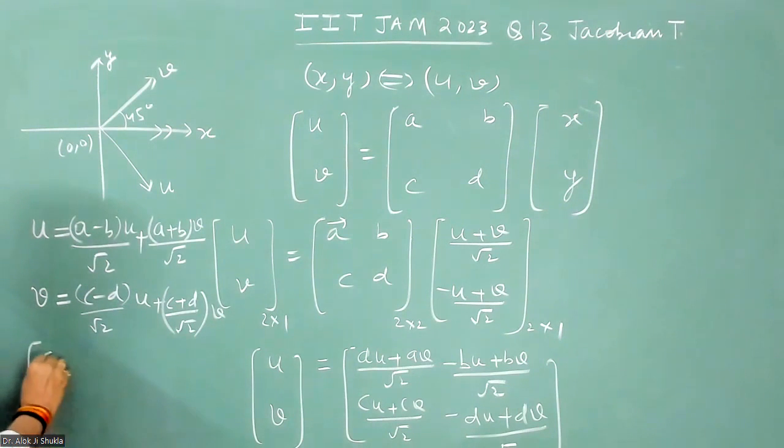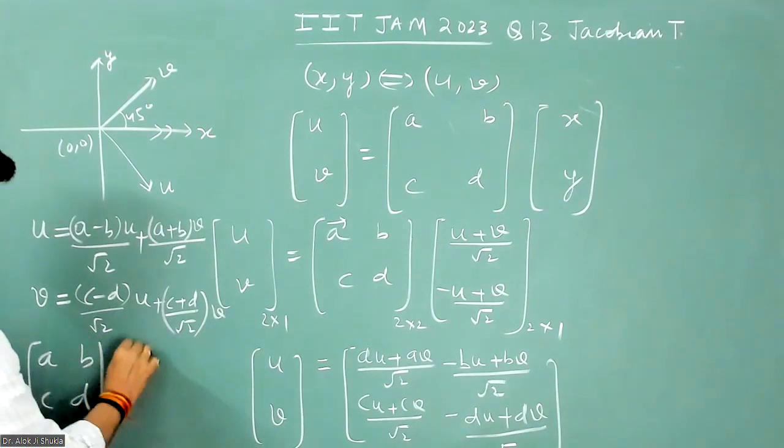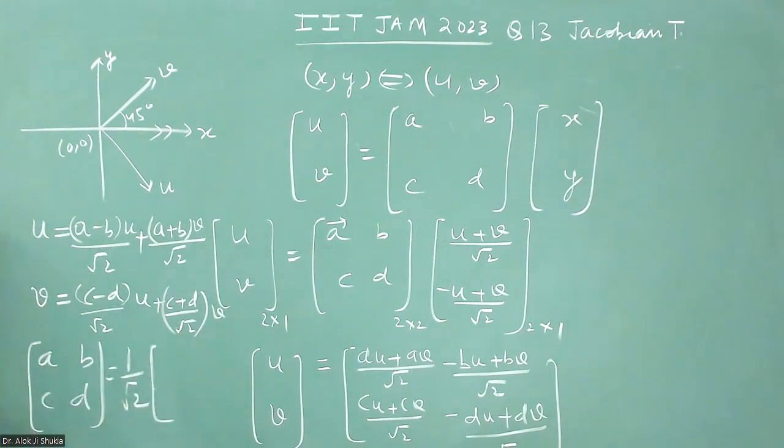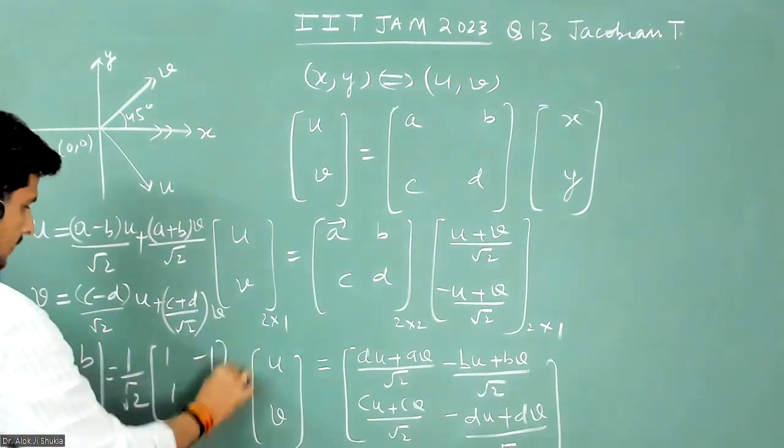what we get is the value of a, b, c, d will become equal to one by root two and one, minus one, and one, one.